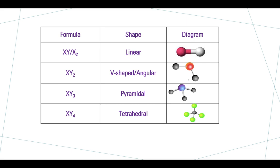Our third shape is pyramidal, represented by molecules with the formula XY3 — things like ammonia NH3 or phosphine PH3, and similar molecules. Our last shape is tetrahedral, represented by molecules with the formula XY4 — things like methane CH4, carbon tetrachloride which is one carbon surrounded by four chlorines, and silane which is one silicon in the middle surrounded by four hydrogen atoms.